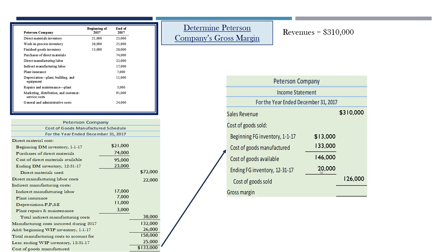If Peterson Company had $146,000 of finished goods available but still has $20,000 remaining unsold, the difference — $126,000 — is what they actually sold. That is their cost of goods sold. They sold their products for $310,000 in sales revenue and spent $126,000 producing those goods, so their gross margin — or gross profit — for the period was $184,000.